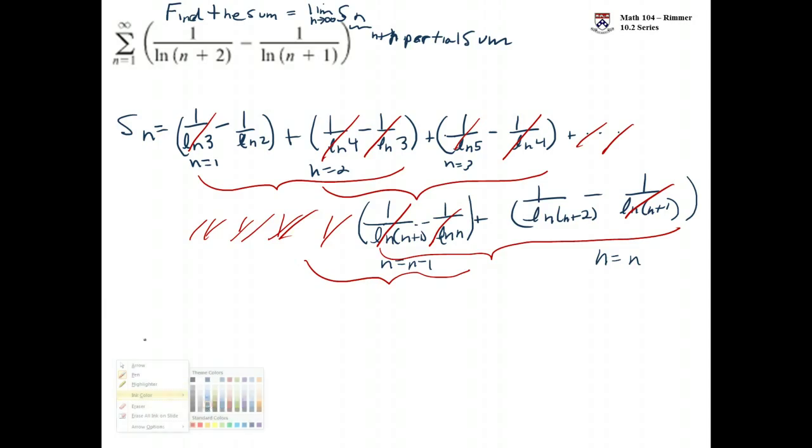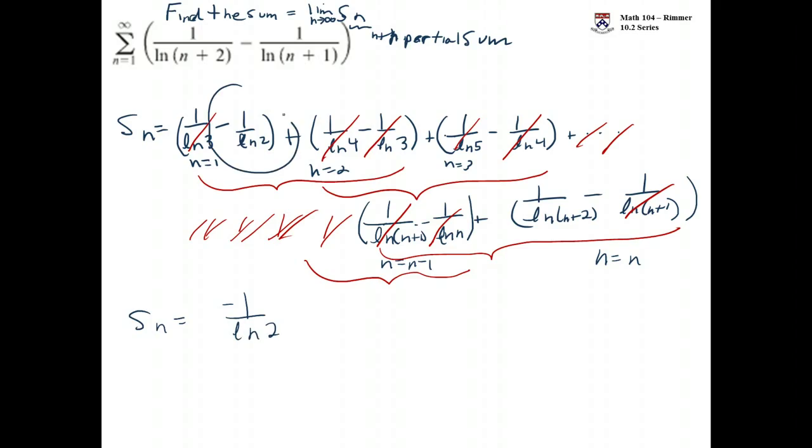You would be left with the S sub n term being this first term that didn't cancel. Leftover would be this last term that didn't cancel. Your job is to find the limit as n goes to infinity of that S sub n.